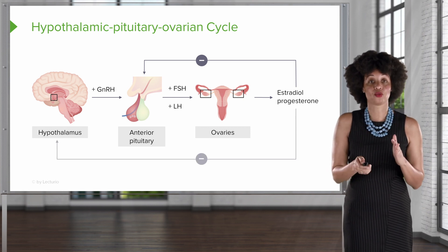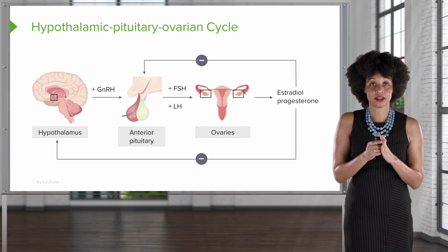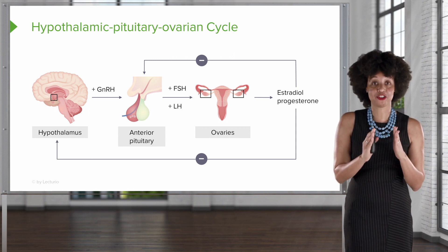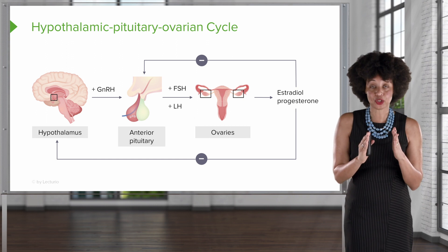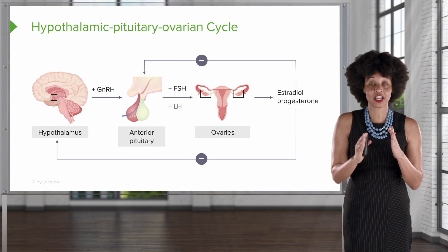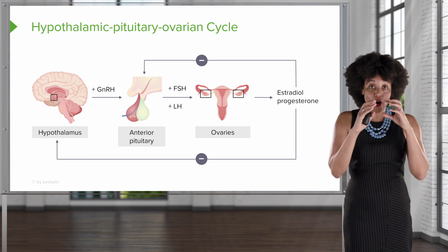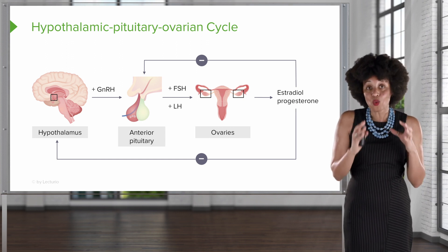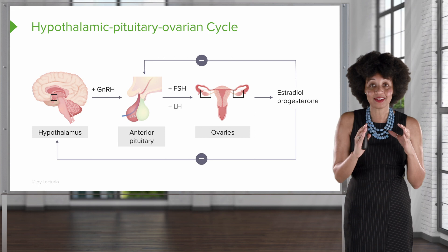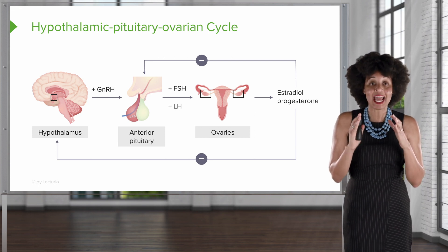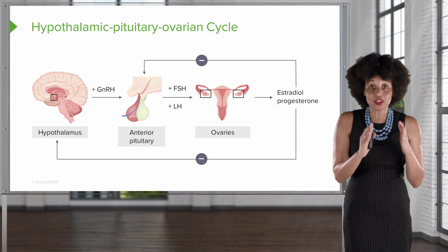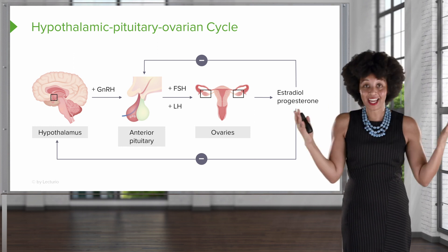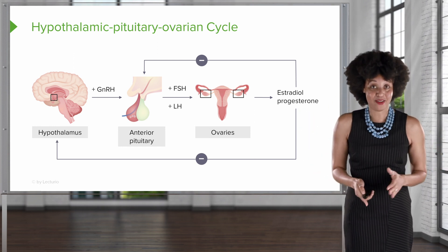The same thing happens with the hypothalamus. Initially, as the hypothalamus produces GNRH and stimulates the anterior pituitary to release FSH, that's great because the ovary needs to produce the follicle and the ovum. But once the egg is sufficient size, it needs to convert to a negative feedback loop to slow down the stimulation of GNRH and FSH, because our egg is ready.